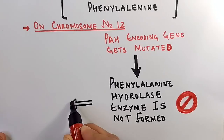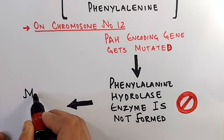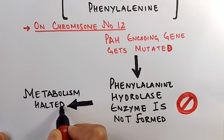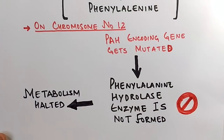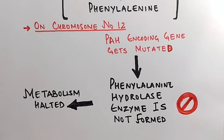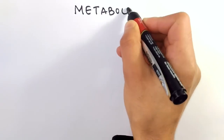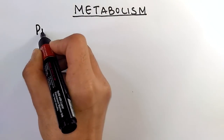When phenylalanine hydroxylase enzyme is not formed, the metabolism of phenylalanine gets halted. When the metabolism of phenylalanine gets halted, the phenylalanine remains in the blood as such. In this way, phenylalanine metabolism disruption occurs.